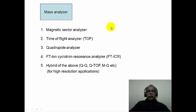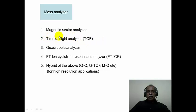Once ions are produced, they are analyzed in an electric sector or magnetic sector analyzer. Magnetic sector analyzers are very common; ions are separated based on their mass-to-charge ratio. One can also use a time-of-flight (TOF) analyzer, where heavier ions travel slower and smaller ions travel faster. A quadrupole mass spectrometer is another option, and ion cyclotron resonance — a very sensitive Fourier transform technique — is also commonly used. Combinations of these analyzers are used in hybrid mass spectrometers.